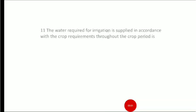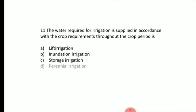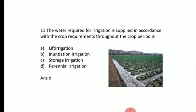The water required for irrigation is supplied in accordance with the crop requirement throughout the crop period — Option A: lift irrigation, Option B: inundation irrigation, Option C: storage irrigation, Option D: perennial irrigation. Answer is Option D, perennial irrigation. Crop period is from sowing to harvesting; when full water supply is maintained throughout this period, it is called perennial irrigation.